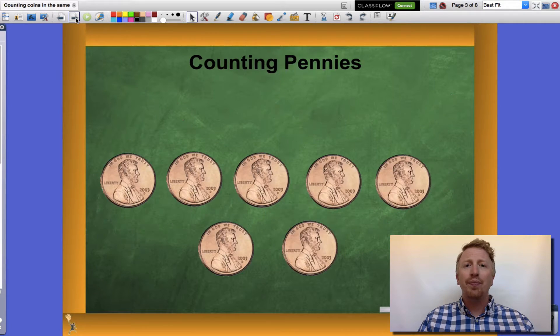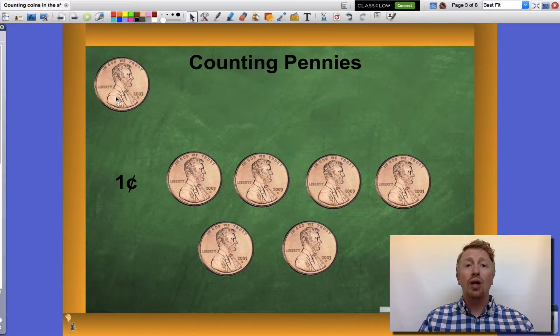So how do we count groupings of coins? Let's start with pennies. I know a penny is worth one cent, so that means in order to count pennies I'm going to have to count by ones. I have one penny so one cent,